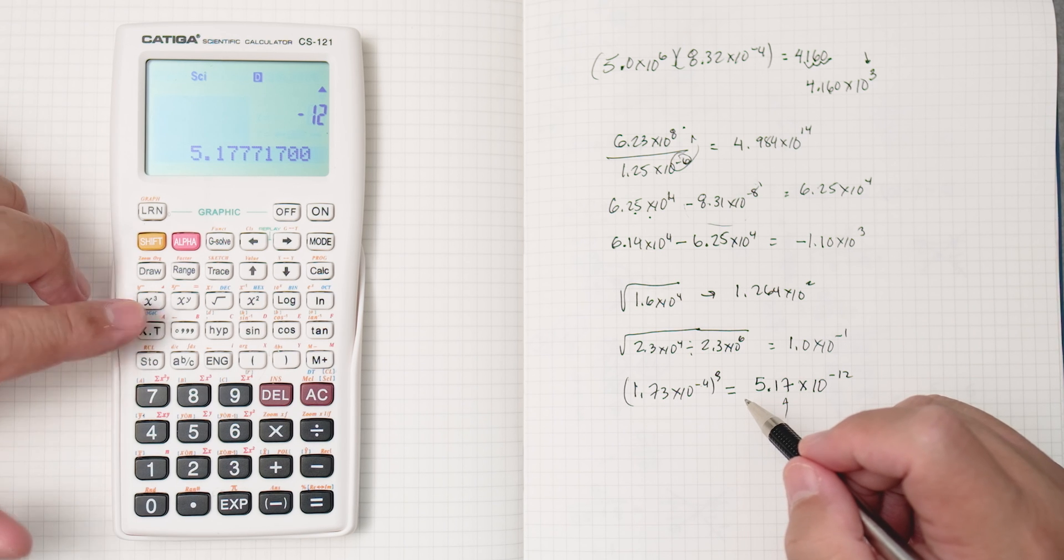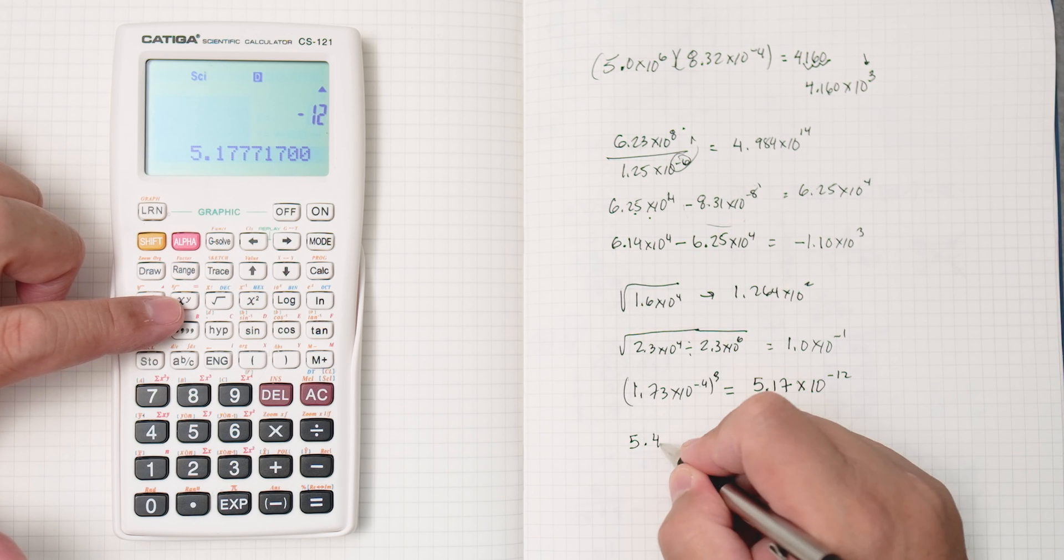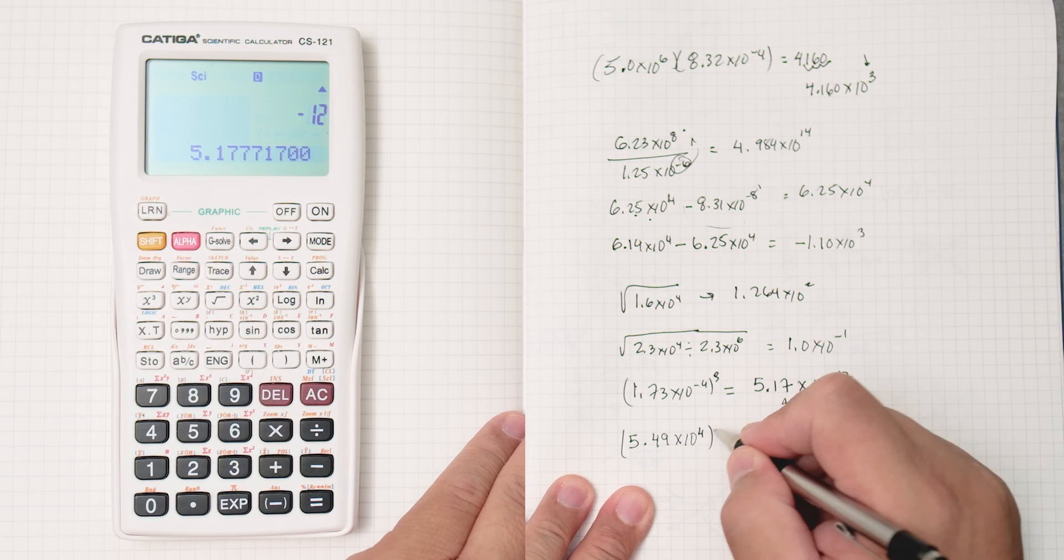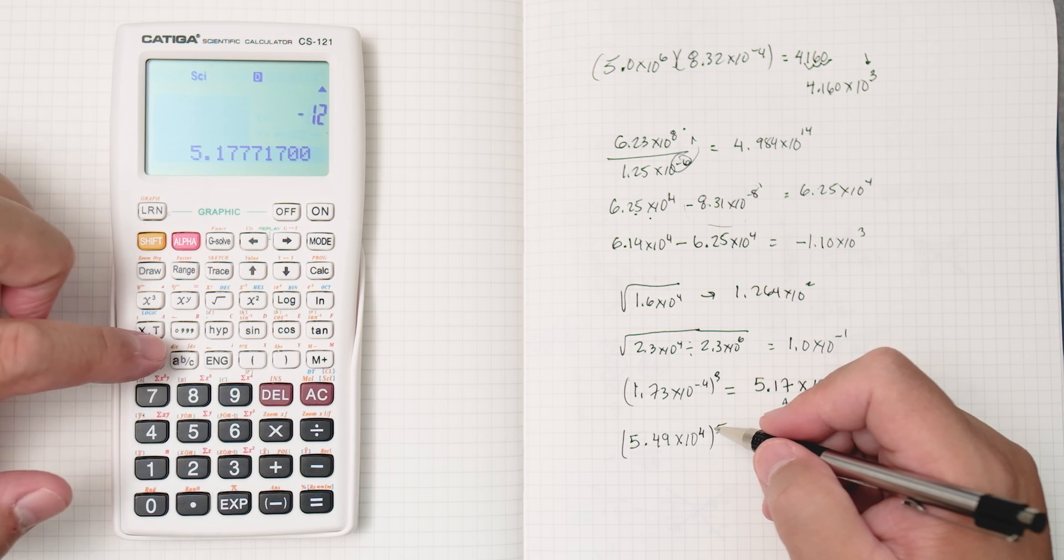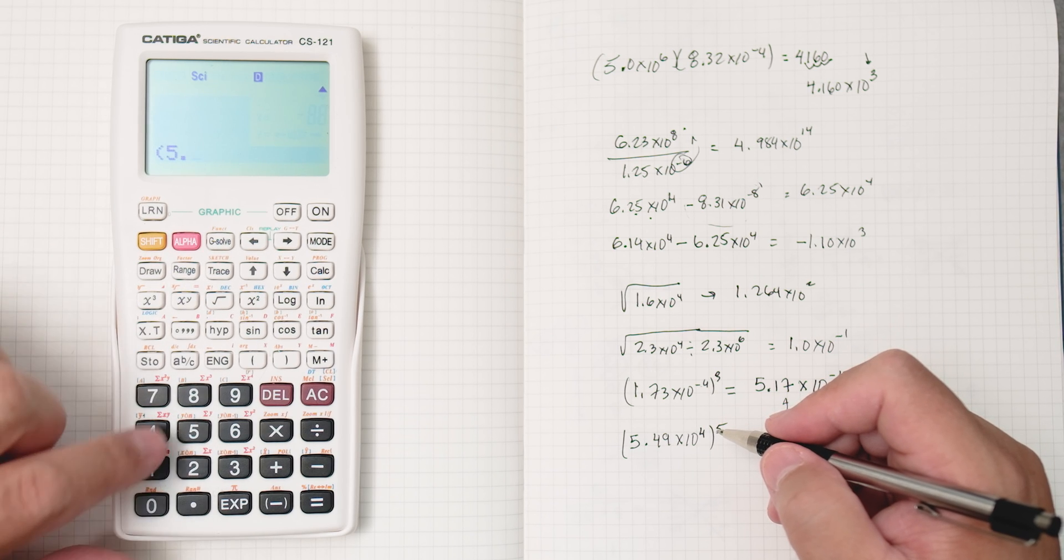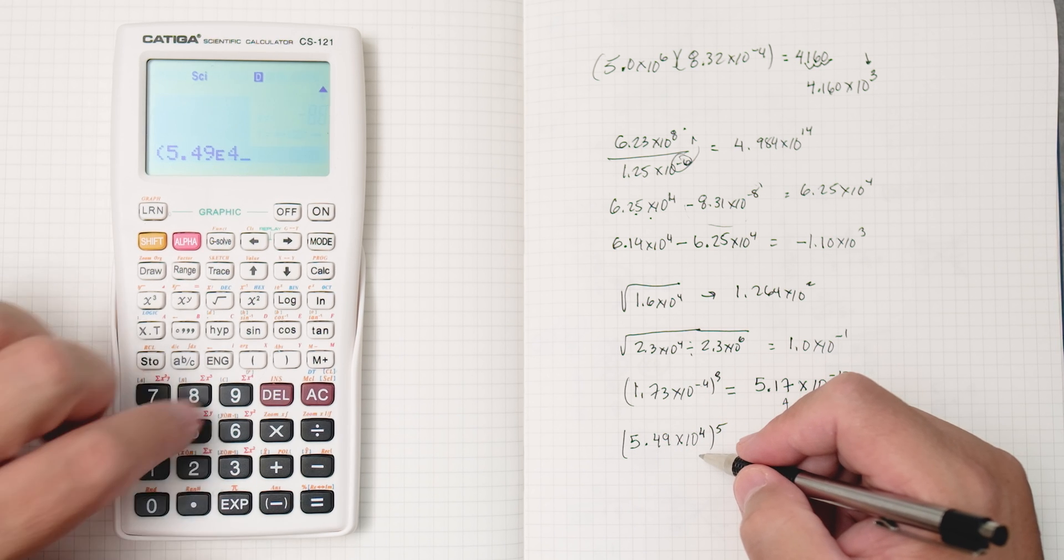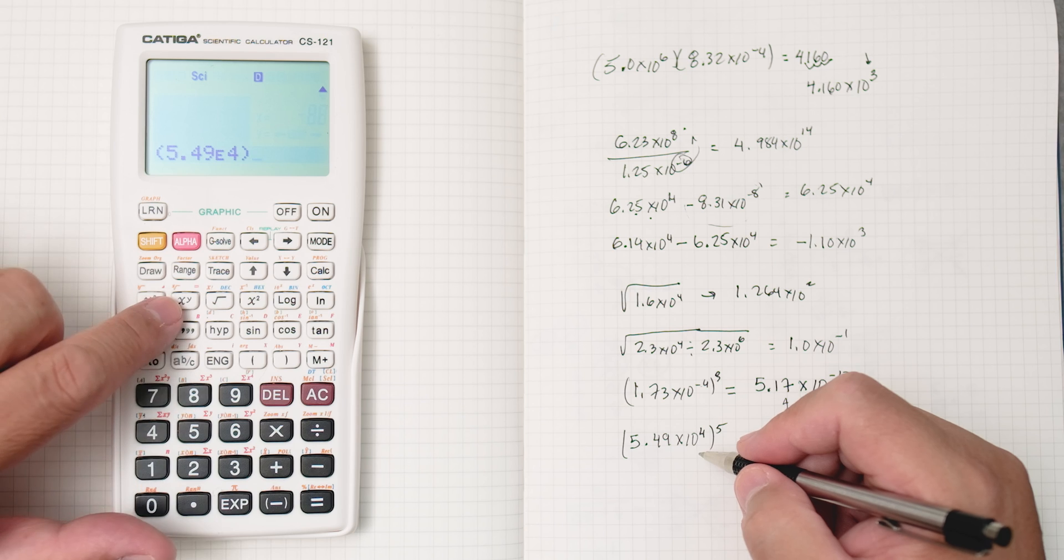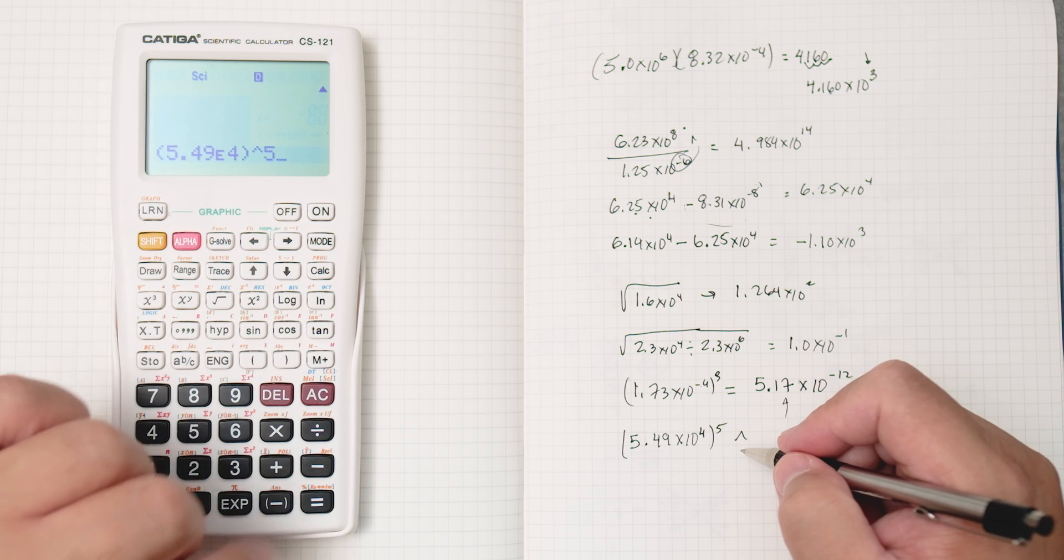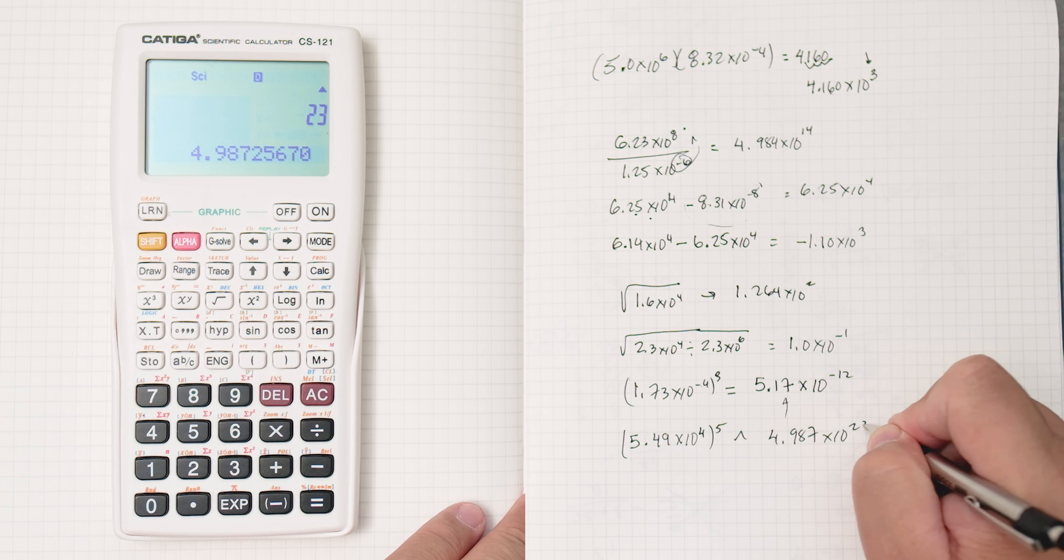And you can do different powers, like 5.49 times 10 to the, let's say, 4 to the power of 5. I think it's safe to put parentheses most likely, it probably does it for you without parentheses, but you can try it. 5.49 times 10 to the 4th, close parentheses, then x to the y, which is a carat key, to the 5th power, and that gives you 4.987 times 10 to the 23rd.